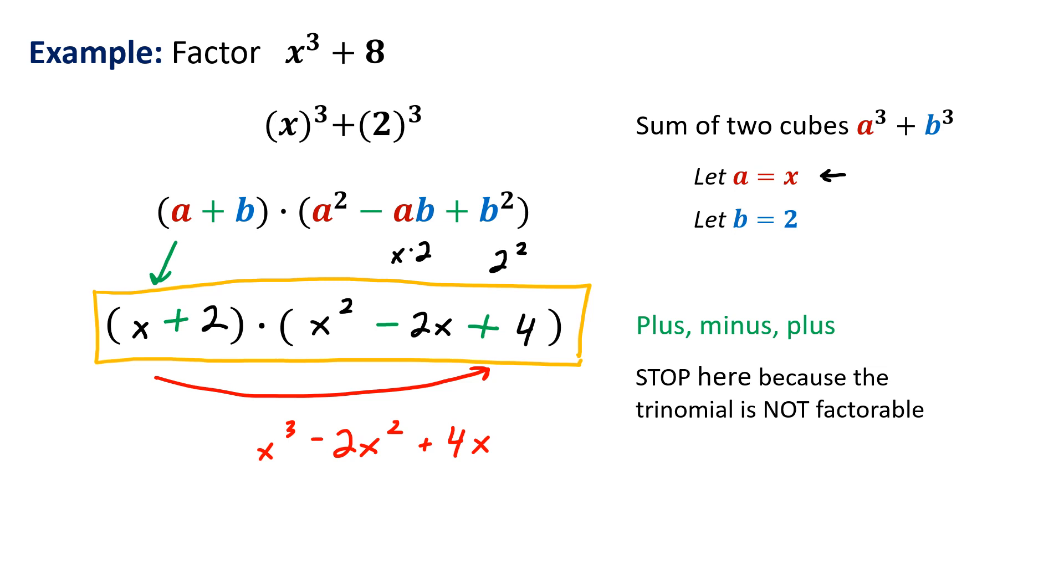And then I have to distribute the 2. So we distribute the 2 so that's positive 2x squared. This one right here 2 times negative 2x is negative 4x and then the last one is plus 8. So take a look what happens here. The only thing remaining is x to the third power. This cancels out that's zero this cancels out that's zero and we have plus 8 which is what we started with. Checks off.